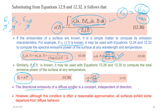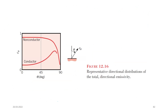The directional emissivity of a diffuse emitter is constant — independent of direction — and depends only on wavelength. However, all real surfaces exhibit some departure from diffuse behavior. For non-conductors, directional emissivity is approximately constant up to 45 degrees, then reduces toward zero at theta = 90 degrees. For conductors, the value is near zero up to 45 degrees, then rises to a maximum before reducing slightly.